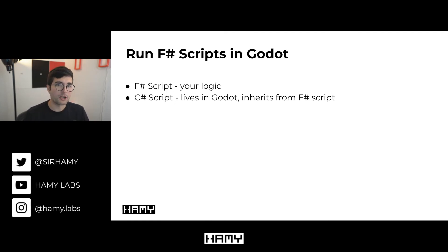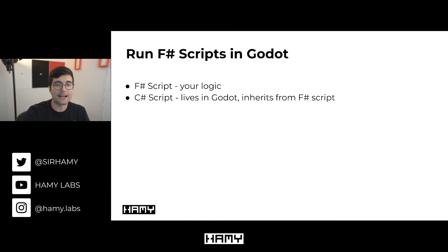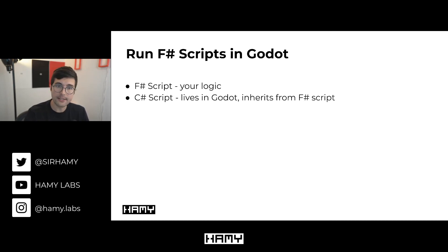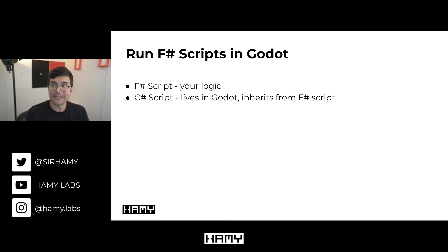So basically when we want to run an F-sharp script, what we're going to do is create an F-sharp script that has all of our logic in it. Then for each F-sharp script that we want to be run through Godot, we're going to create a C-sharp script which basically acts as a wrapper and is going to be attached to our Godot node — but it's just going to inherit directly from the F-sharp script. In this way, we're implicitly calling F-sharp directly from Godot, but there is a little bit of boilerplate involved. So let me just show you what this looks like.